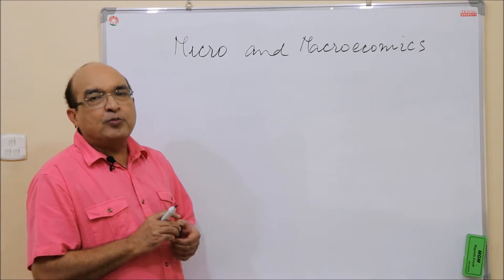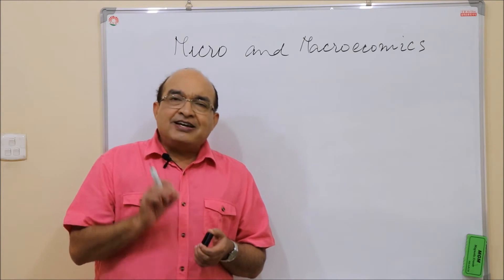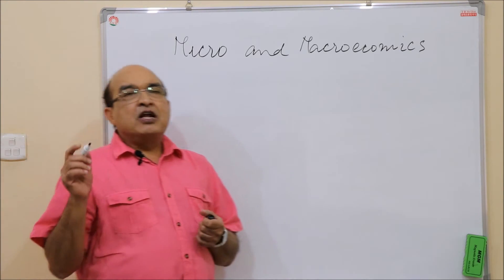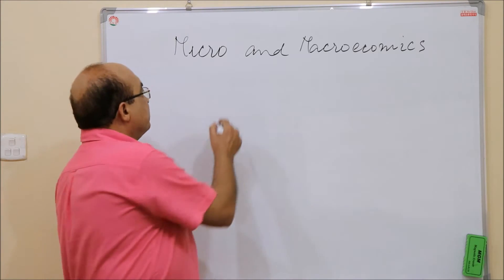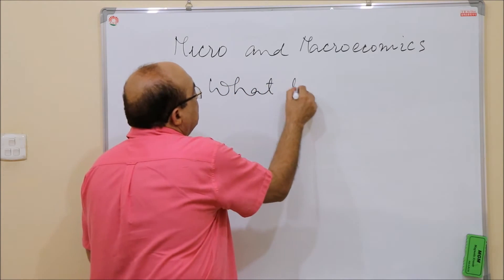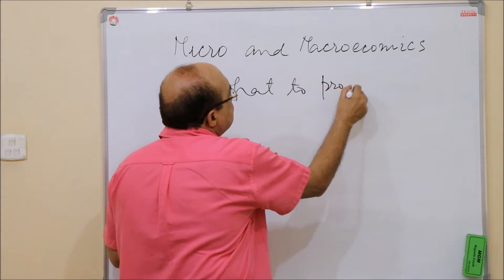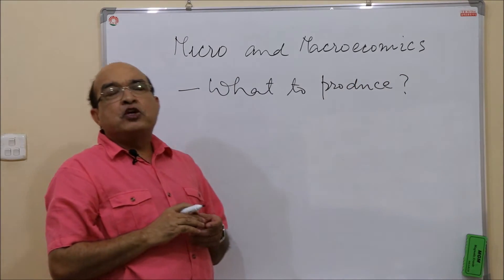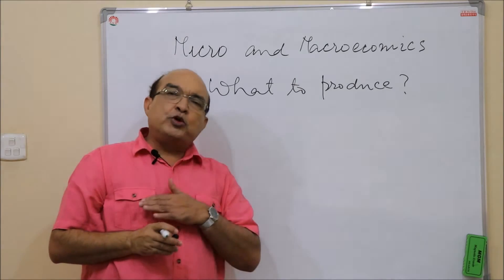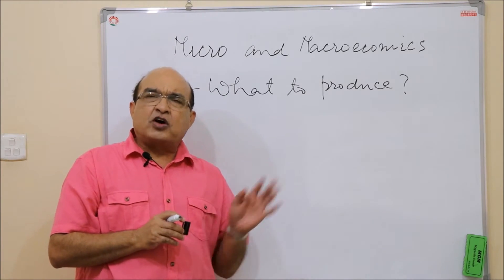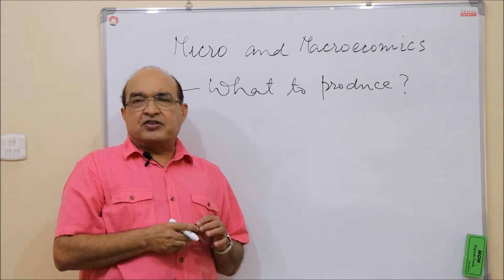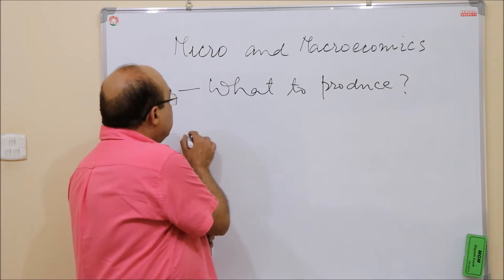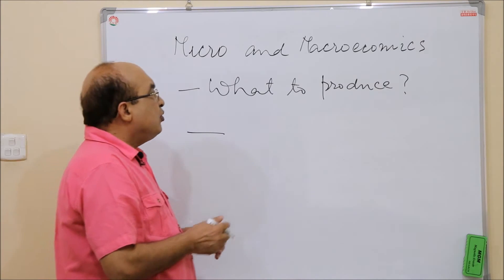Now I will begin by mentioning three basic problems that are central to every economy. The first is: what to produce — that is, what goods and in what quantity are to be produced. An economy produces hundreds of thousands of goods and services, so in what quantity should these goods be produced?